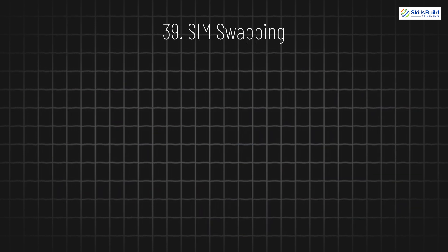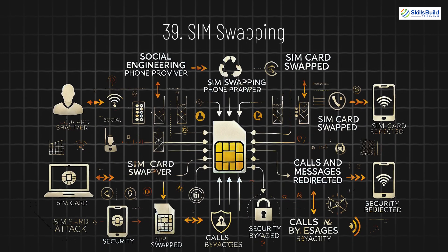39. SIM Swapping. SIM swapping involves hackers tricking your phone provider into transferring your phone number to a new SIM card, giving them access to your calls and messages, and allowing them to bypass security systems like two-factor authentication.